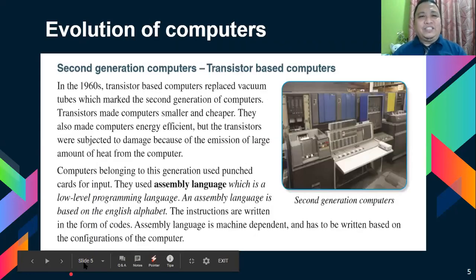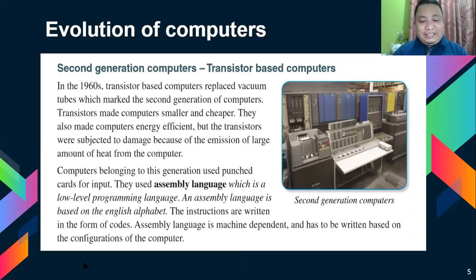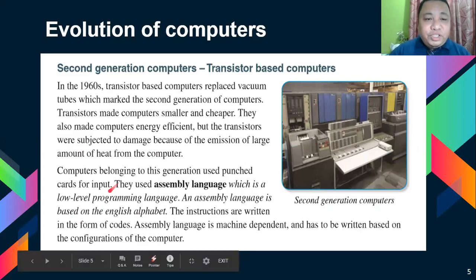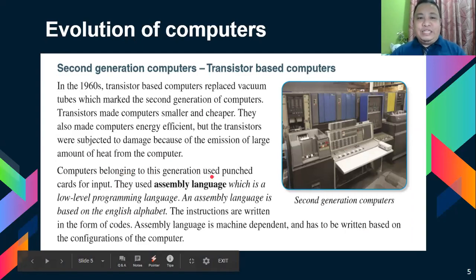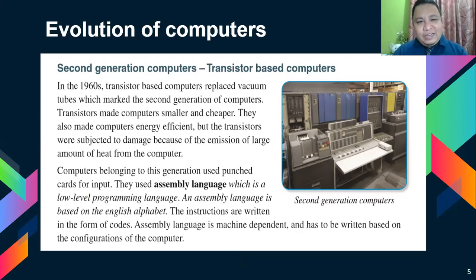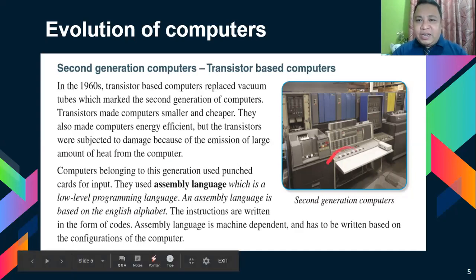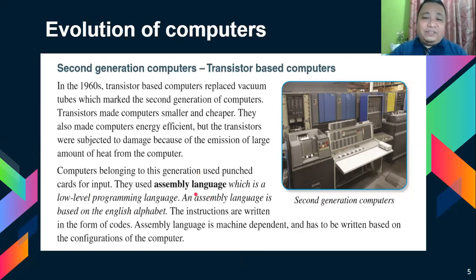Then we also have second generation computers — transistor-based computers. Transistors were invented already in the 1960s. Computers of this generation used punch cards for input. So instead of a CD, hard disk, or USB for saving files, they used punch cards. They also used assembly language, which is a low level programming language based on the English alphabet, written in the form of codes. So there was coding also in the 1960s.